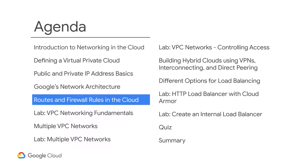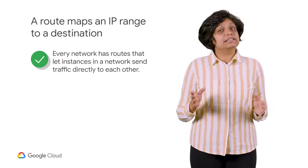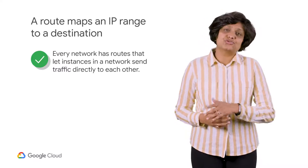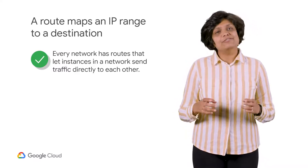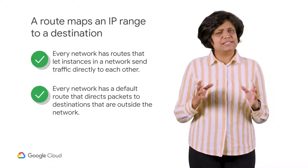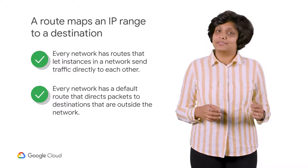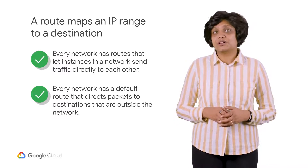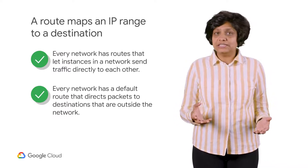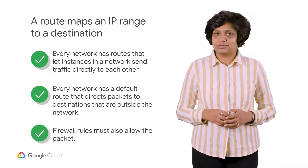In this topic, you will consider routes and how firewall rules allow traffic to flow within a VPC. By default, every network has routes that let instances in a network send traffic directly to each other, even across subnets. In addition, every network has a default route that directs packets to destinations that are outside the network. Although these routes cover most normal routing needs, you can also create special routes that override these routes.